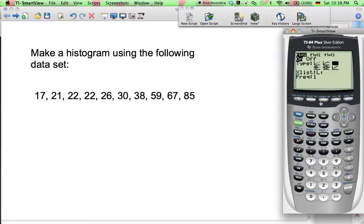And then you can go to zoom, go to zoom stat to see your histogram. So if we press trace here, we can see the height of each of these bars. The first one is a height of n equals 6, that means the height is 6. That one's 1, and that one's 2, and so on.